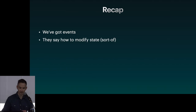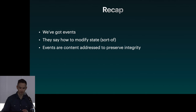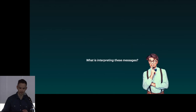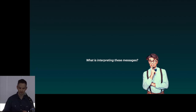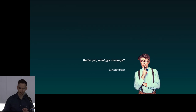Recap: we've got events, we say how they modify the state, events are content-addressed to preserve integrity, and everything is stored in a key-value database. What's next? What is interpreting these messages? Better yet, what is a message? Let's start there.